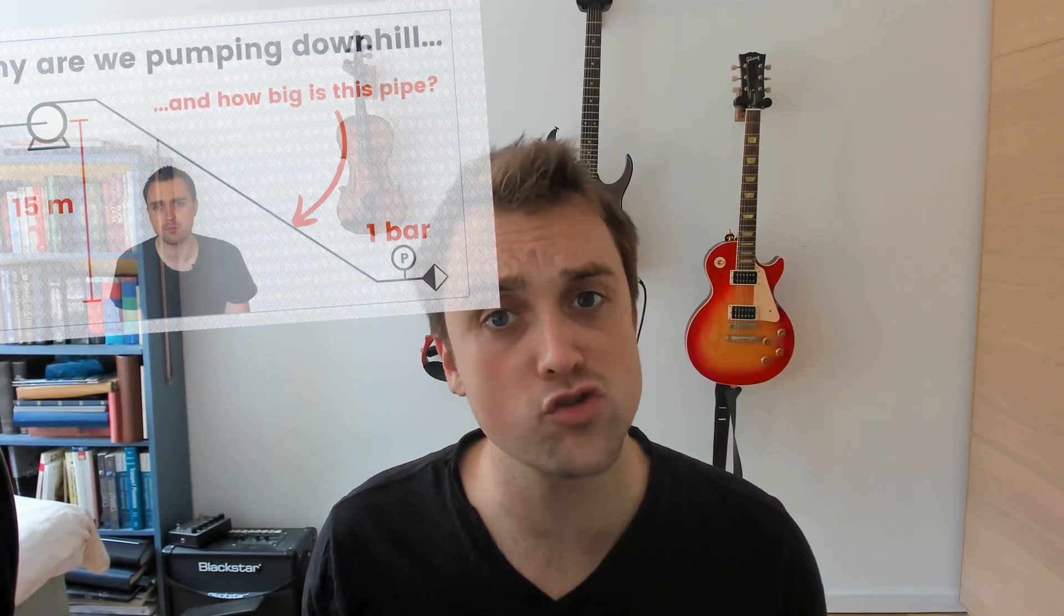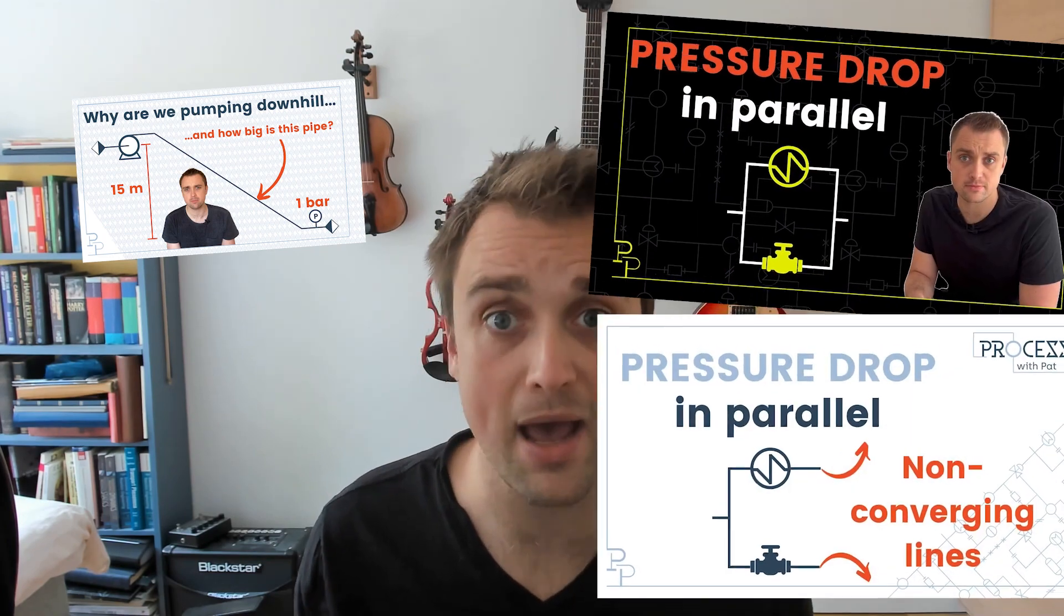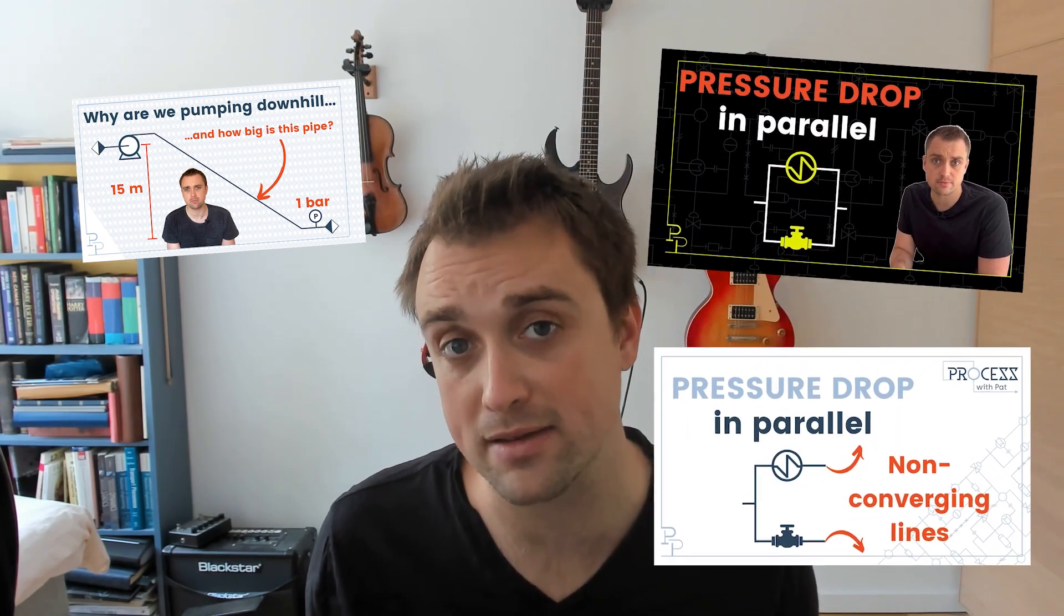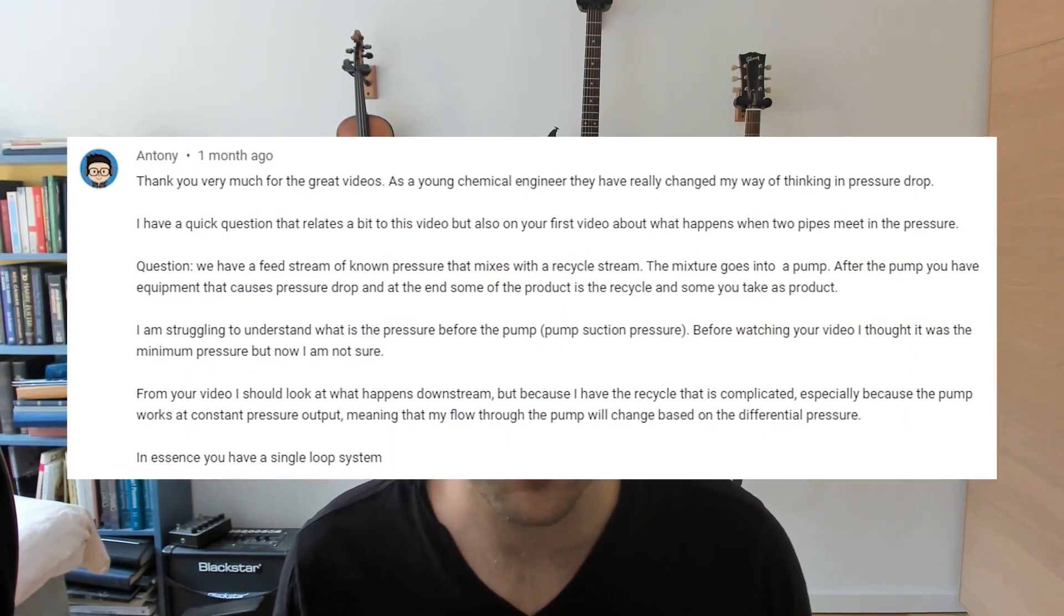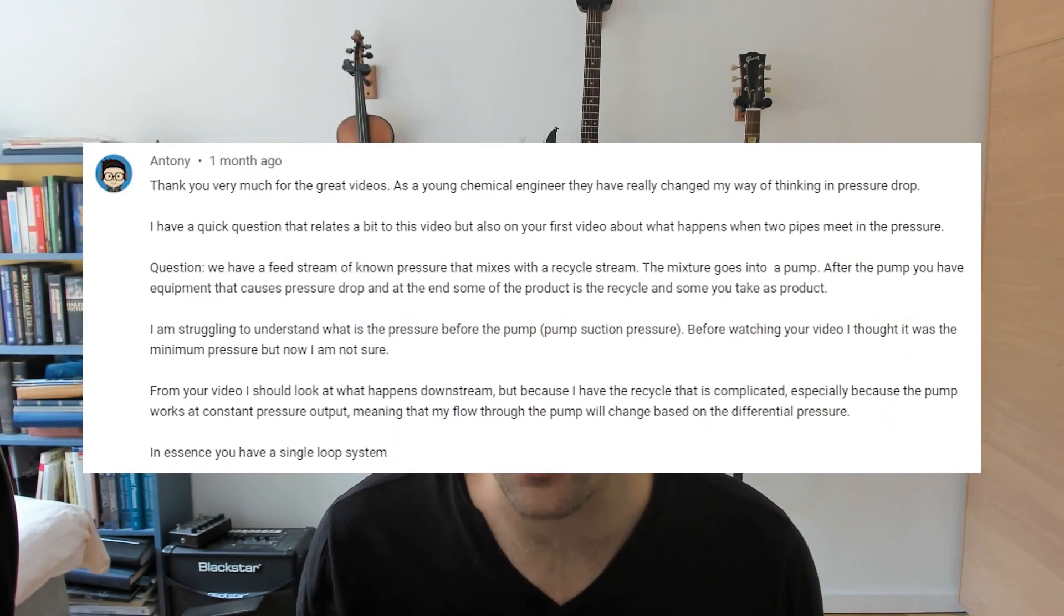I've looked at how to generate system curves for plain boring straight runs of liquid piping, then looked at what happens when that straight run splits into branches. Now based on a question from Anthony in the comments, we're going to look at how you generate system curves for systems that contain recycle lines.